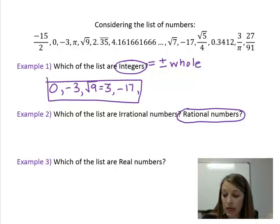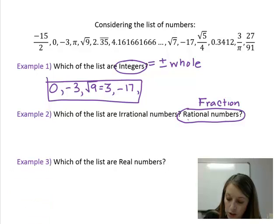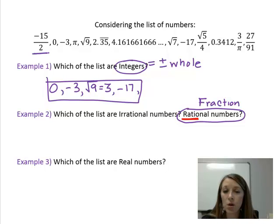Rational numbers, those are anything that can be written as a fraction. Whenever you see this word rational numbers, you should be thinking of the prefix, which is ratio. And ratio is just a fancy word for fraction. So rational numbers, ratios, or fractions. We're going to work left to right of this list and figure out whether they are rational numbers. And if not, that's going to go into our irrational number box. First number on my list, negative 15 over 2.